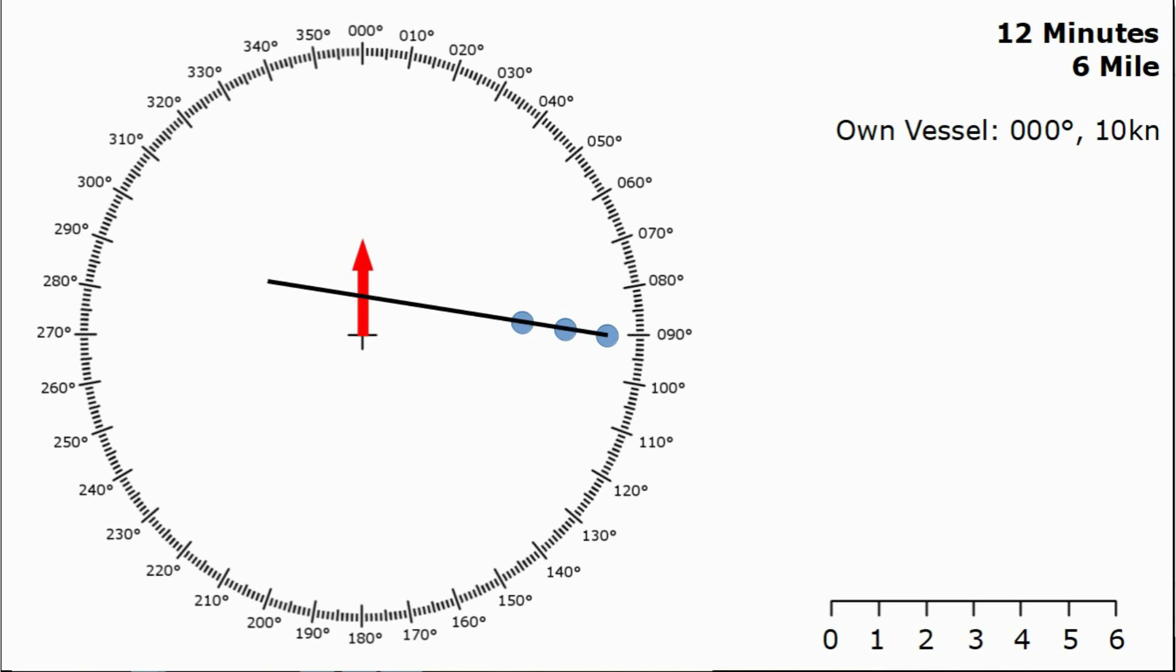The first thing we want to do is put on the relative line of approach. This is simply the line between the dots and it shows the path that the dots are taking so we can see how close it will get to our own vessel.